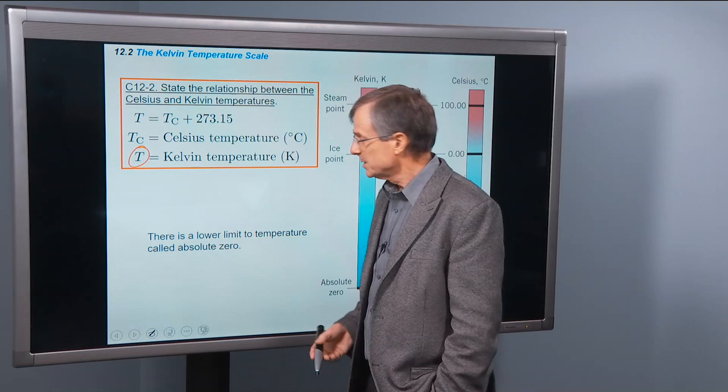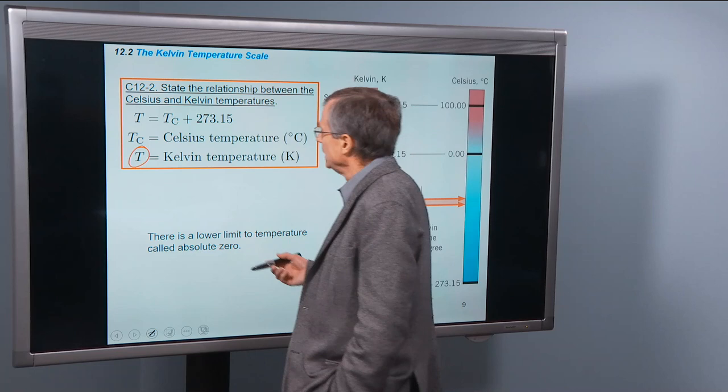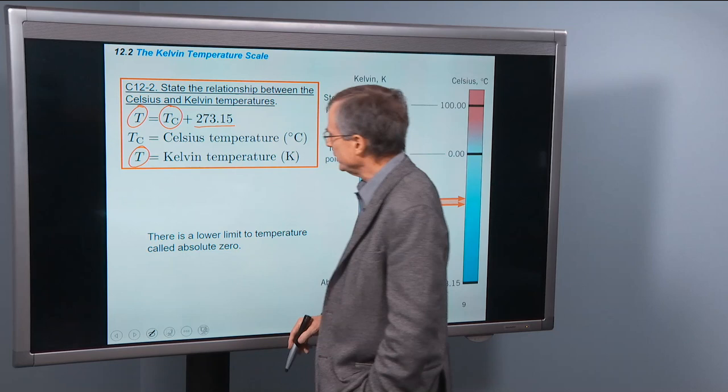This T we just use to denote the Kelvin temperature, because physicists really like the Kelvin temperature scale. Chemists do too. And that's equal to the Celsius temperature plus 273.15 degrees.